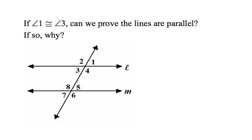Angles 1 and 3 both touch line L. They are congruent and they are vertical, but angle 3 does not touch line M. I need them touching two separate lines, so this is no because they are vertical angles.